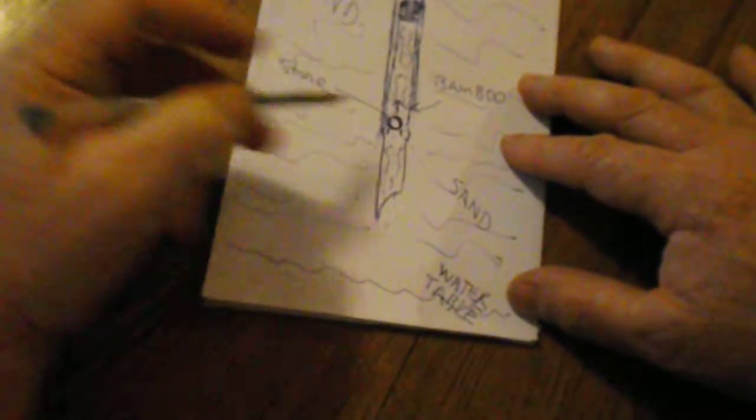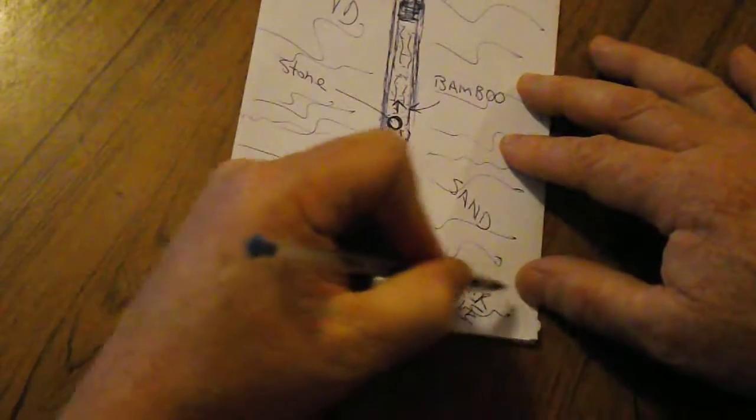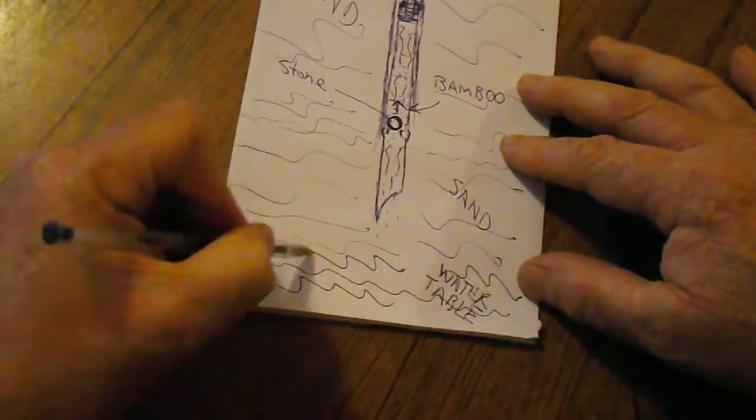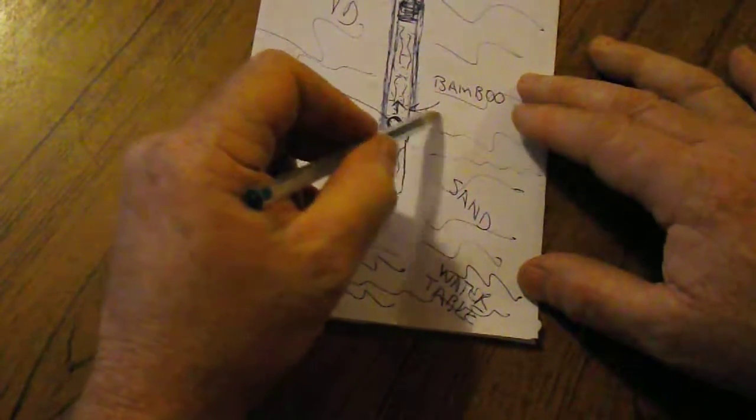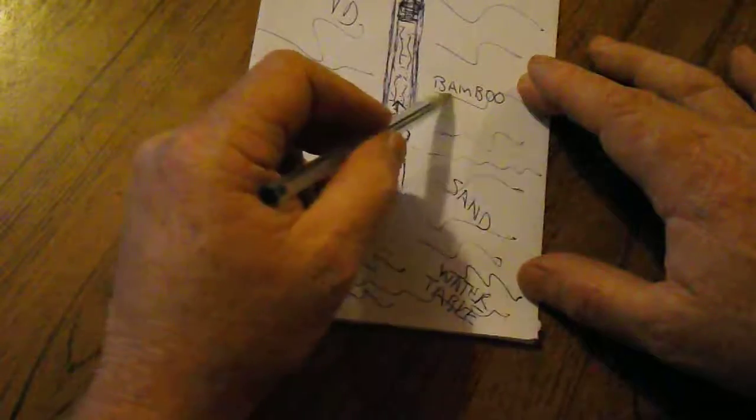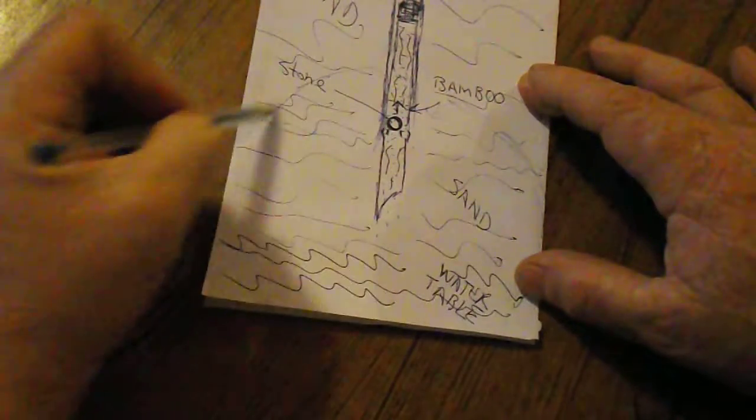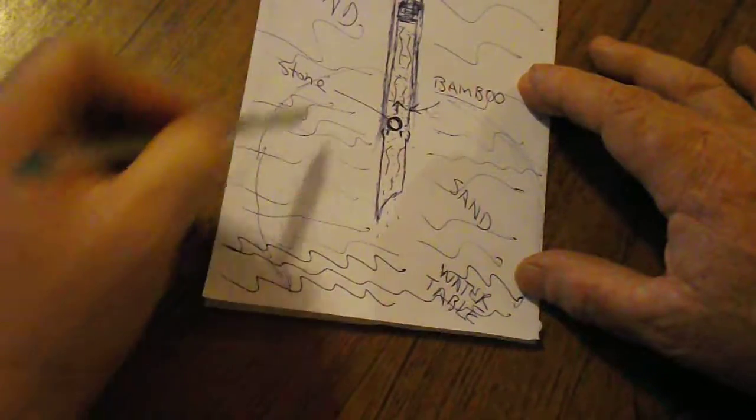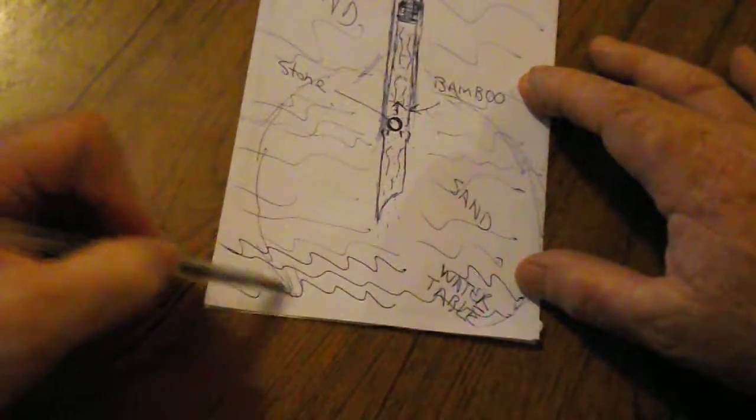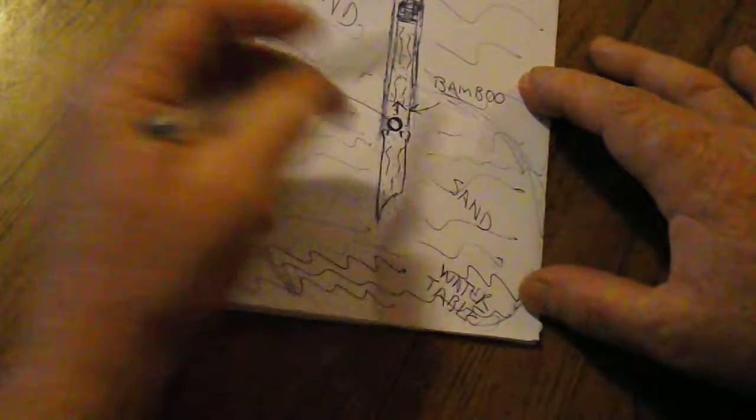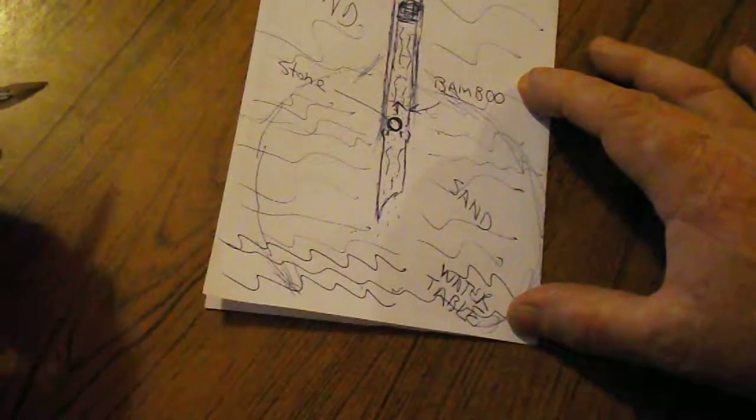So then he drops a charge of gunpowder down here and it blows a great big hole right here like this, underneath the ground, and then that hole fills up with water down here like that.